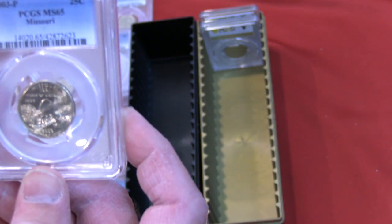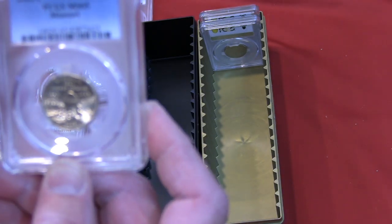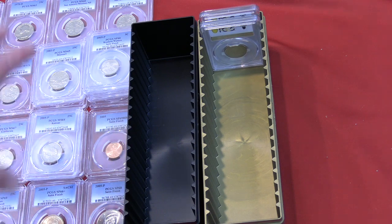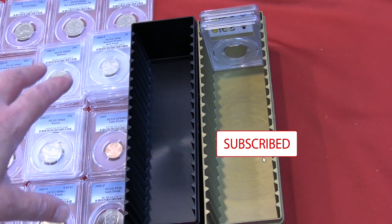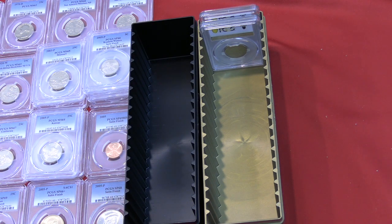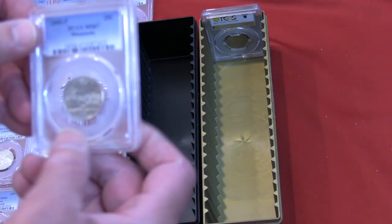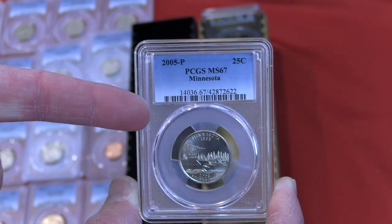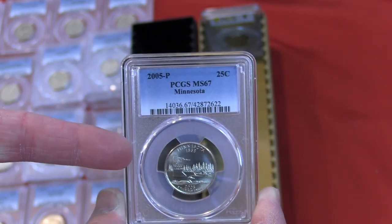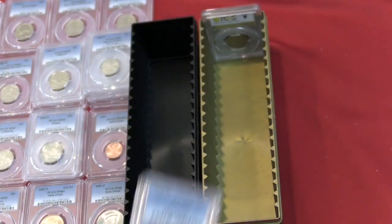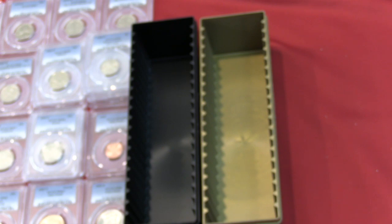Three more to go. 2003 P PCGS MS-65 Missouri quarter. So this is an example. We've got two coins left. This is an example of what we're pulling out quarter-wise. These are the coins that you should be looking for when you're hunting and looking for high condition to submit. Because some of these, like I said, we're going to check and see. You get an MS-68 on some of these, or like this a 2005 Minnesota MS-67.